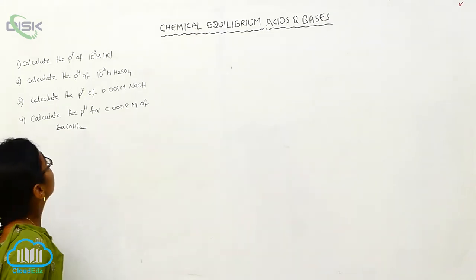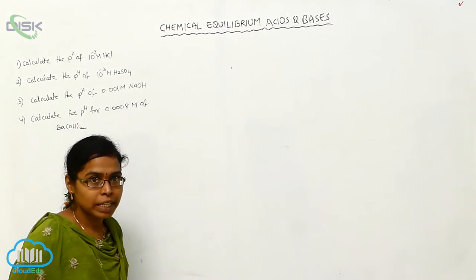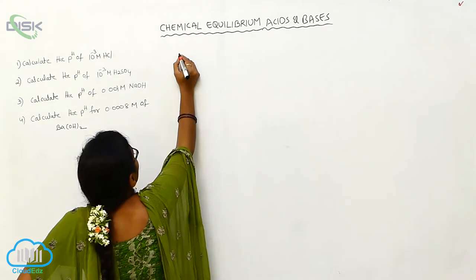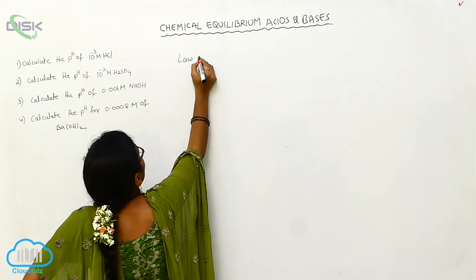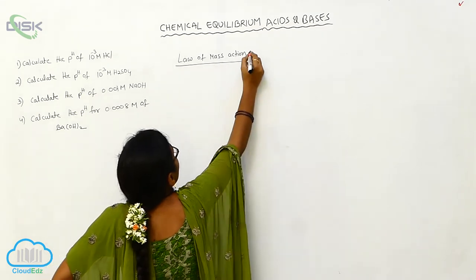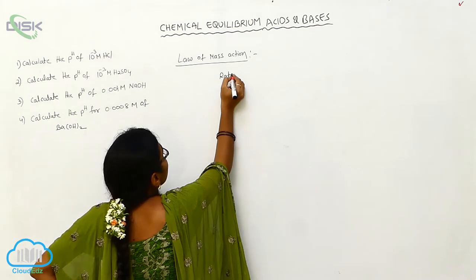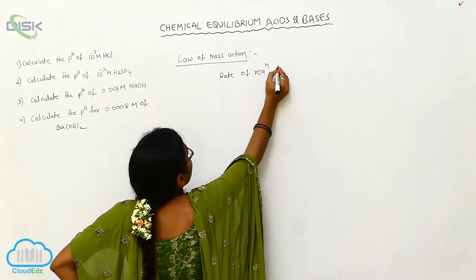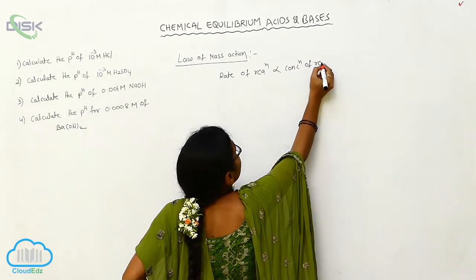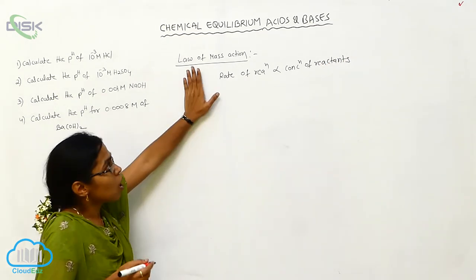Based on acid-cyanide basics, we will cover the calculation of pH values. Before that, I want to give some formulas for the calculation of those values. First of all, in chemical equilibrium we are discussing about the law of mass action. The law of mass action tells about the rate of the reaction — the rate of reaction is always directly proportional to the concentration of reactants.